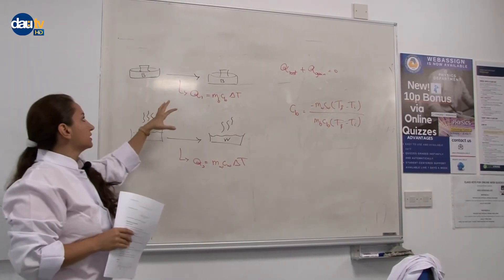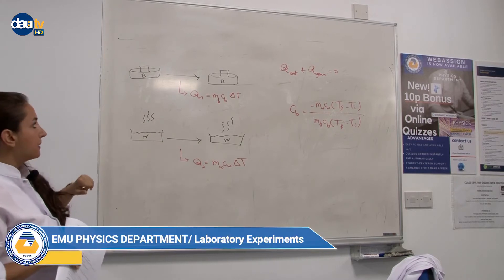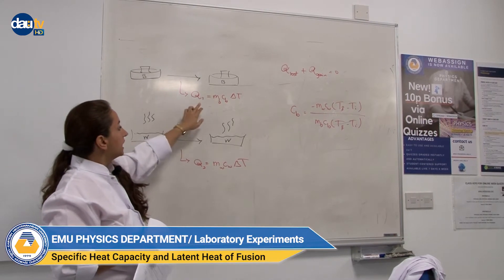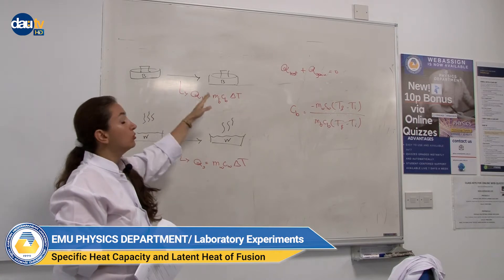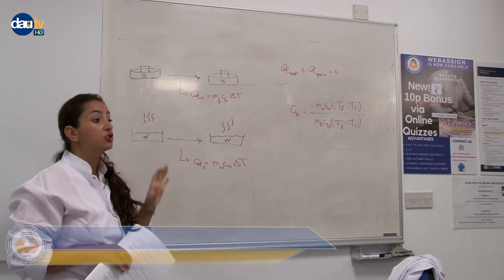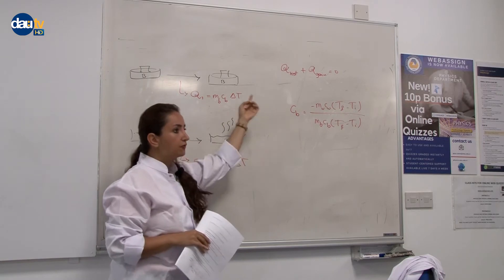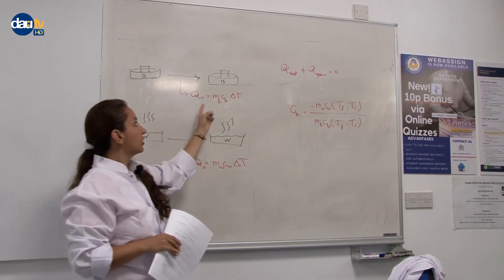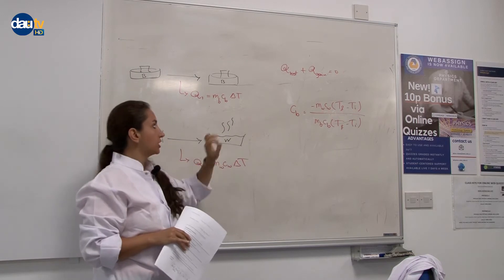For brass or iron it doesn't matter, the process is the same. We have Q1, let's define it as Q1. We have only the change of temperature, not the change of phase. So we use the equation for heat which implies the change of temperature.